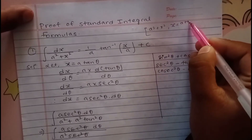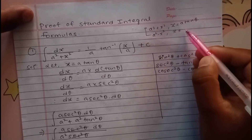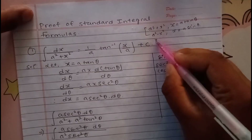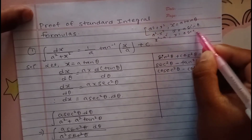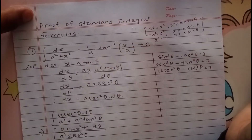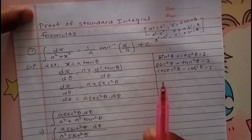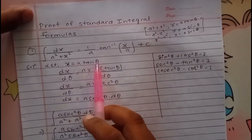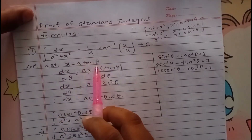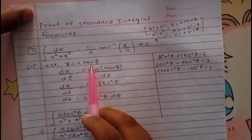So we start with the first formula: integration of dx/(a² + x²) equals (1/a) tan inverse (x/a) plus c. If we have a² plus x² in the integral, we let x equal a·tan θ. If we have a² minus x², we let x equal a·sin θ. If we have x² minus a², we let x equal a·sec θ. This is how we use the substitution method with these formulas.